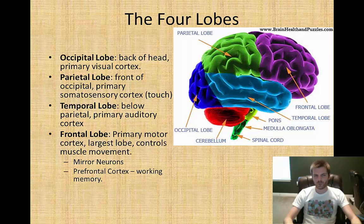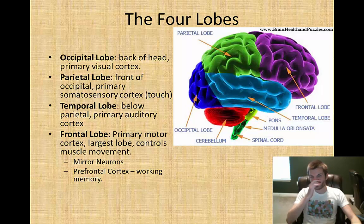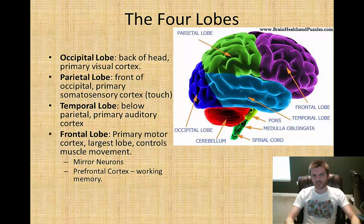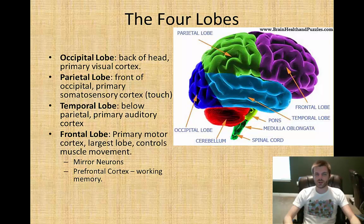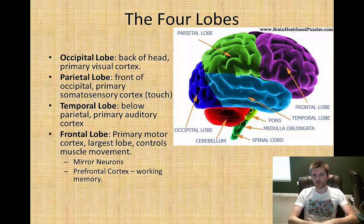The parietal lobe is in front of the occipital lobe and is also known as the somatosensory cortex — it deals with feeling, tactile sensation, or basically touch. One way to remember its location: think of someone patting you on the back of the head saying 'good job' — that area is roughly where the parietal lobe is. The temporal lobe is just below the parietal lobe, located on the sides where your ears are, and it serves as the primary auditory cortex, dealing with sound.